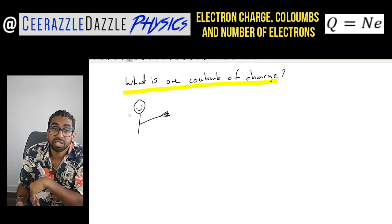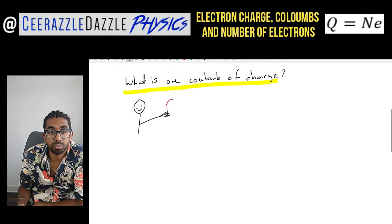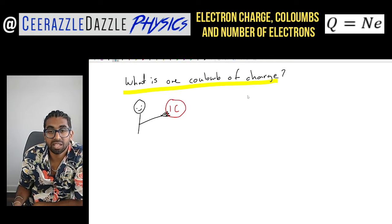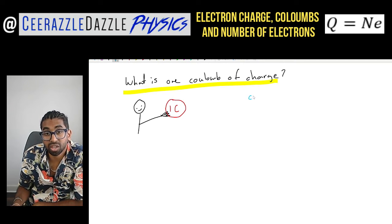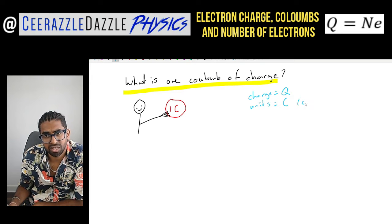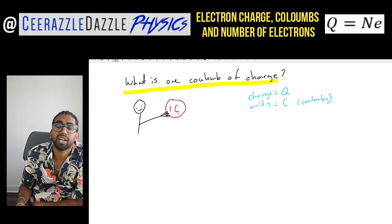The best way I like to explain this is by the following diagram. Let's just say this is you, and in your hand we give you one coulomb of charge. Don't forget that the symbol for charge is Q, and the units are coulombs — capital C — and obviously in words it's coulombs.